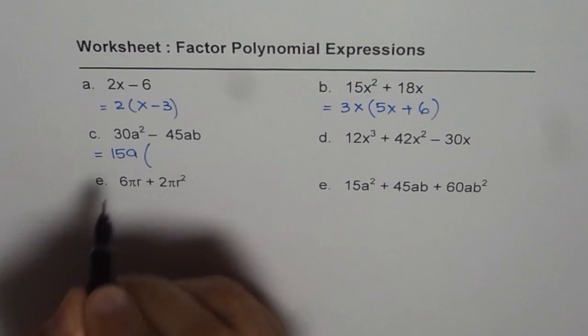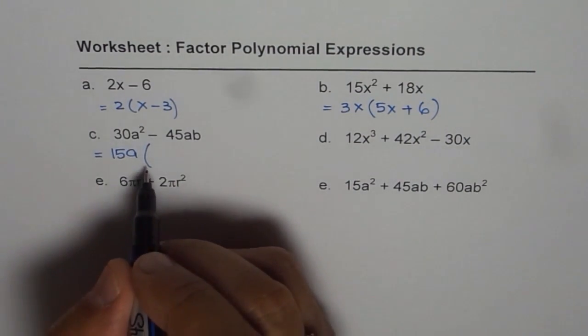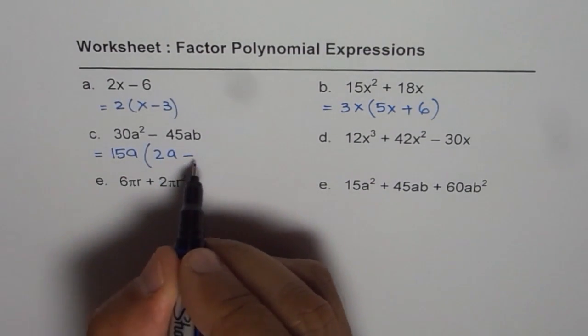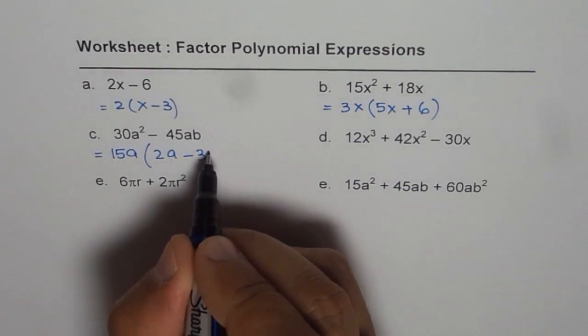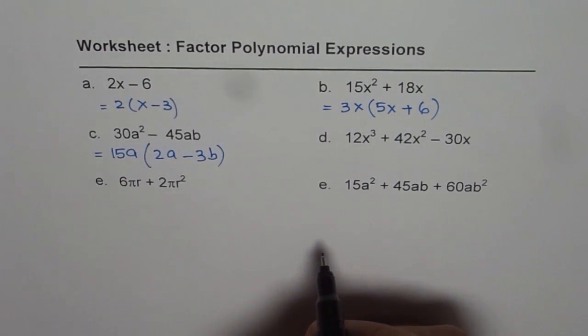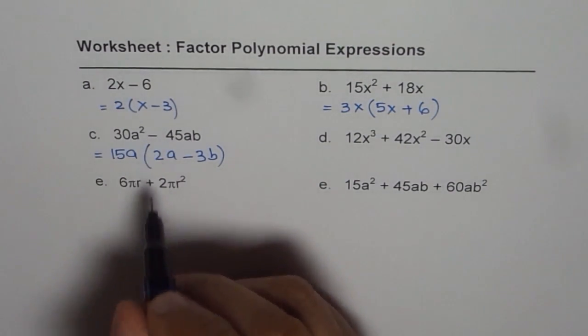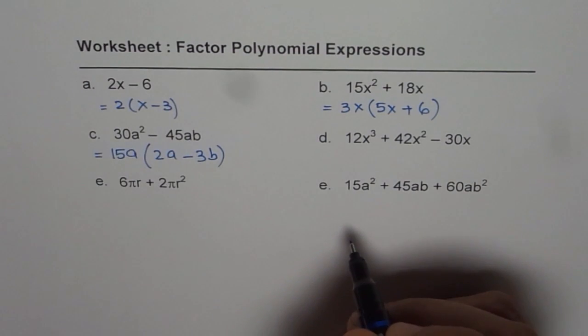We can take 15a outside the brackets, and inside the bracket we get 2a minus 3b. That becomes the solution or factored or the product form of the given binomial term.